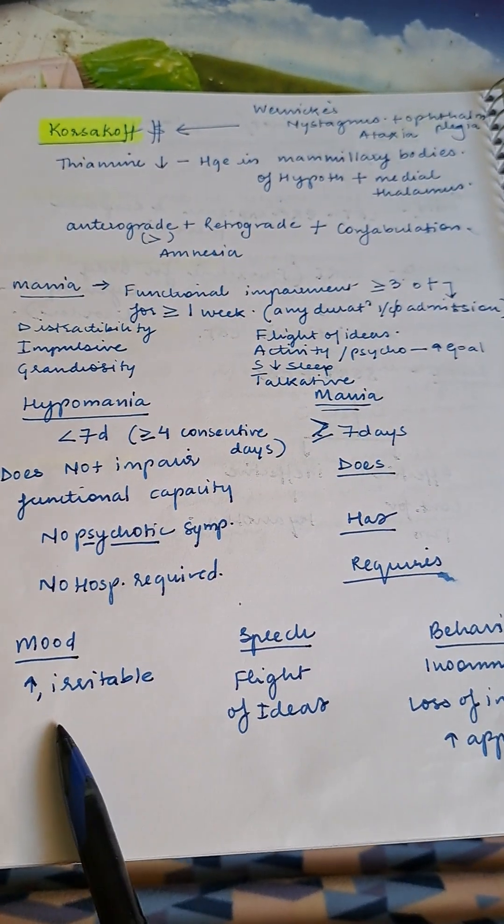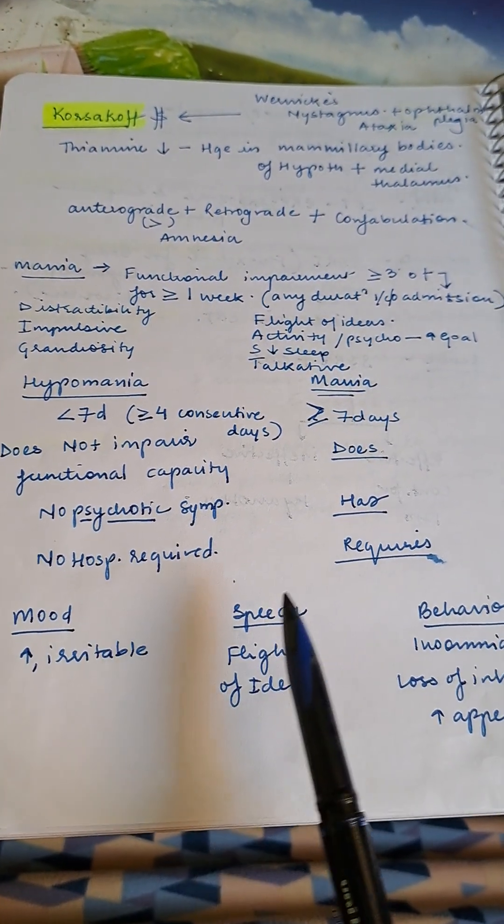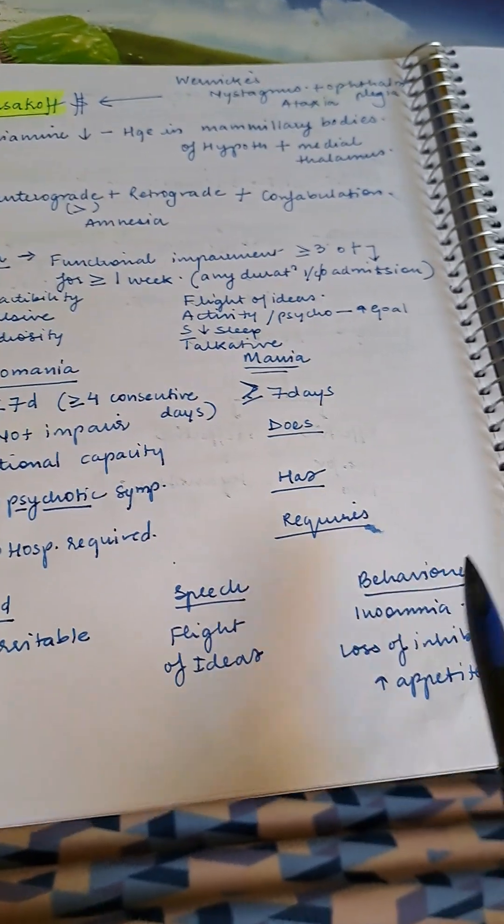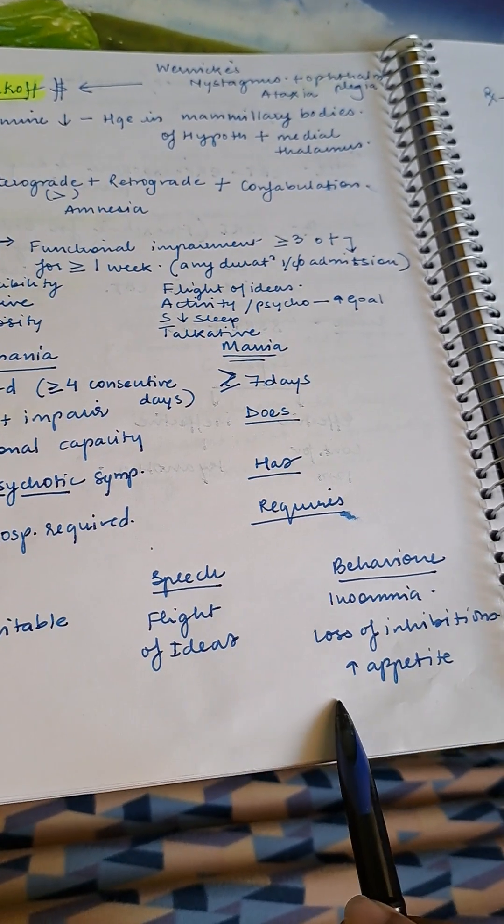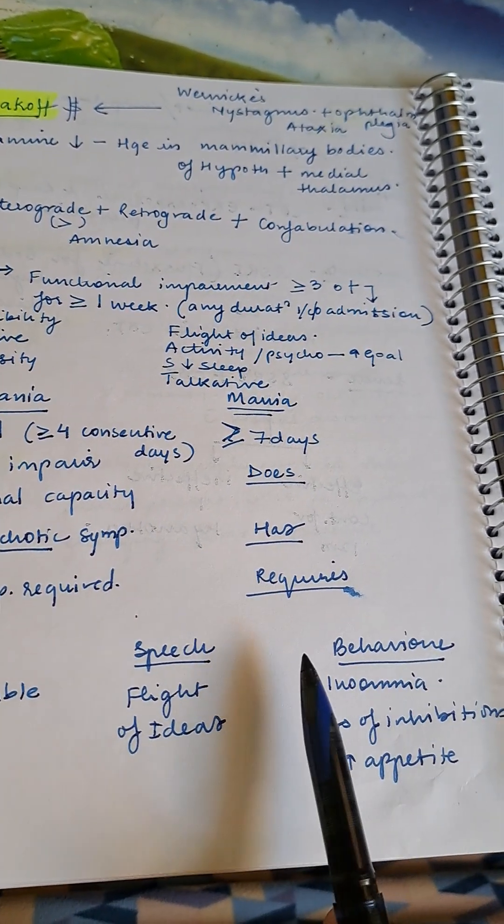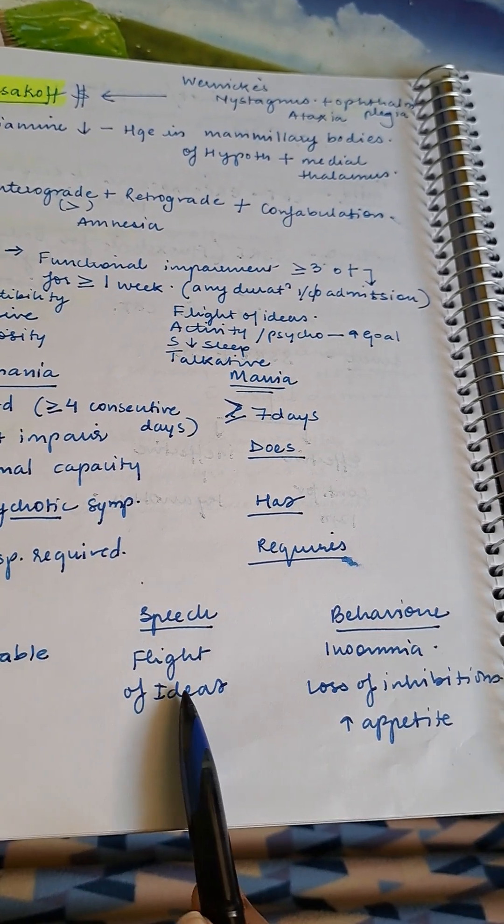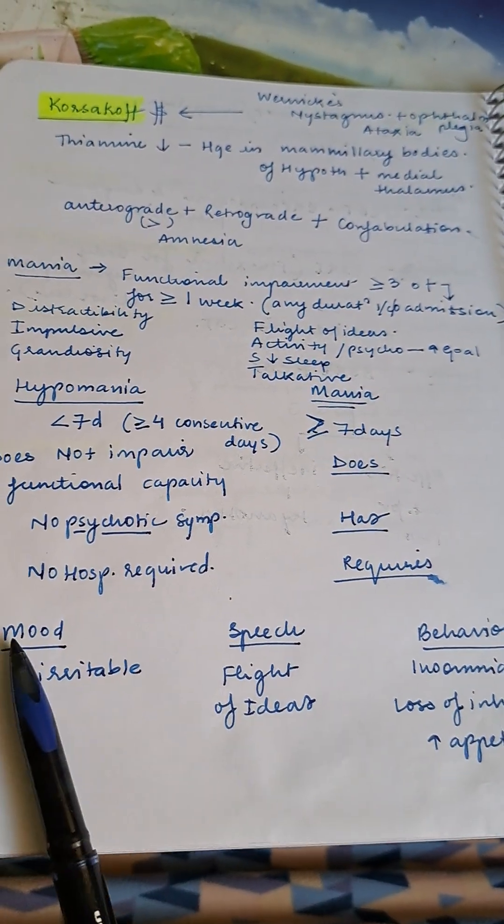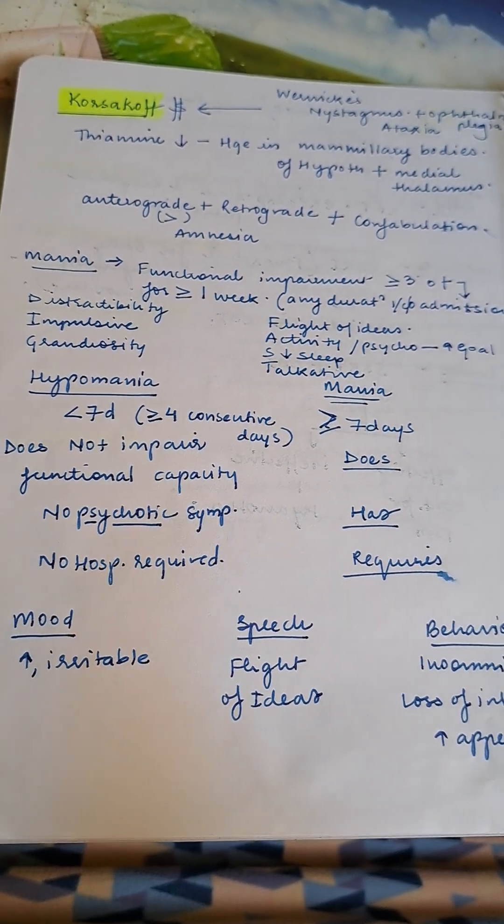Mood, speech, and behavior in mania. Mood: increased mood and patient is irritable. Speech: flight of ideas. Behavior: insomnia, loss of inhibition, increased appetite. All these features will be present.